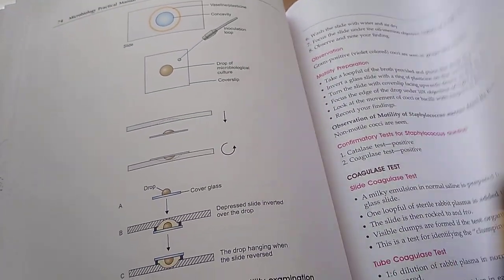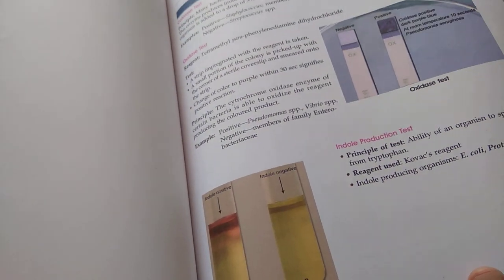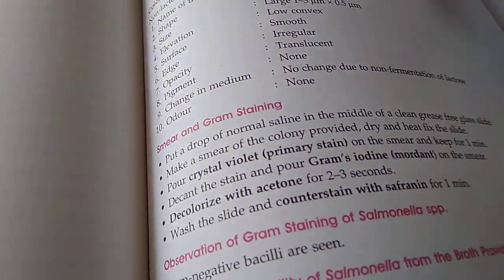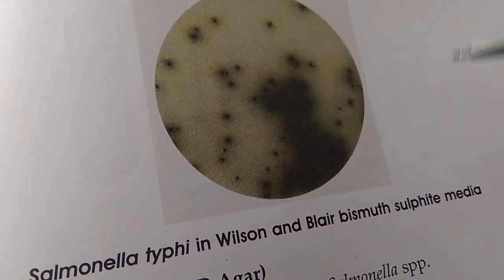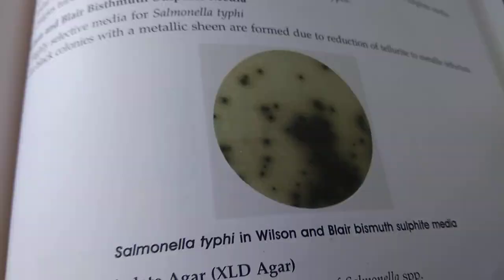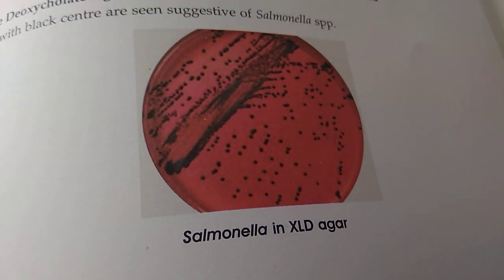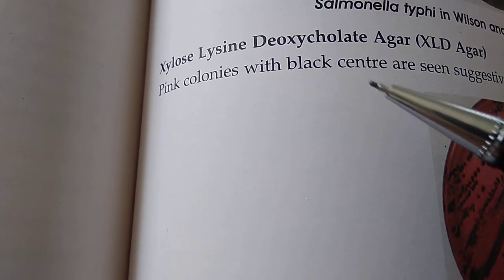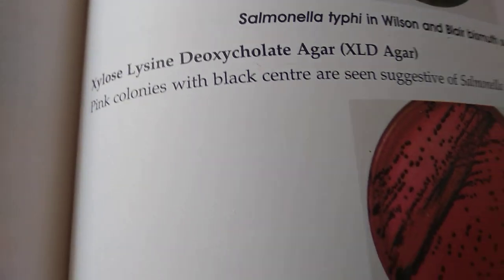This book looks interesting. Not sure if it would be useful for your college record per se, but they have given places to write and draw also — like your record. What is this? Salmonella. Salmonella causes what? Typhoid, is it? Here you have the Wilson and Blair bismuth sulfate media — WBBS. Then this one is Salmonella on XLD agar. XLD is xylose lysine deoxycholate agar. I don't remember using this agar that much.